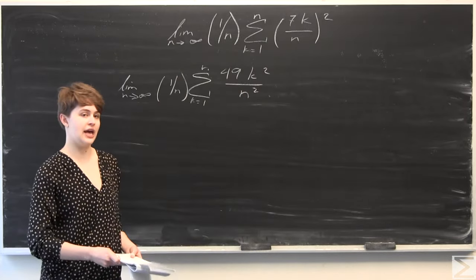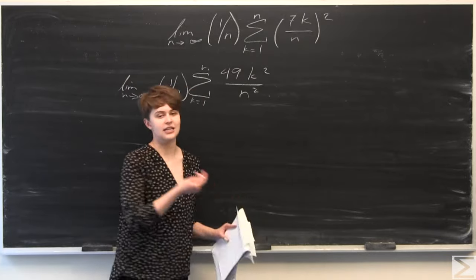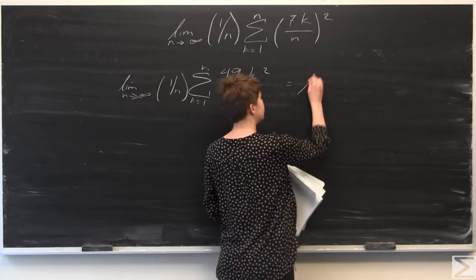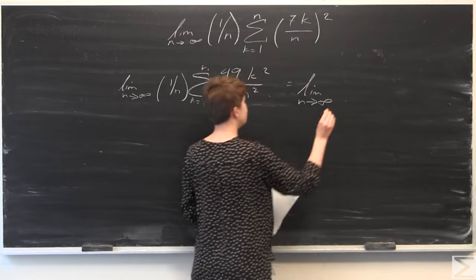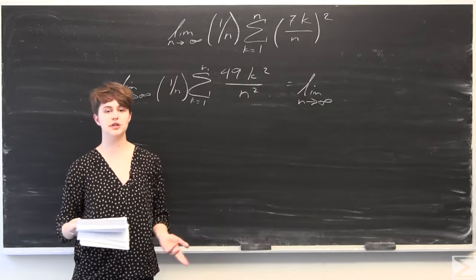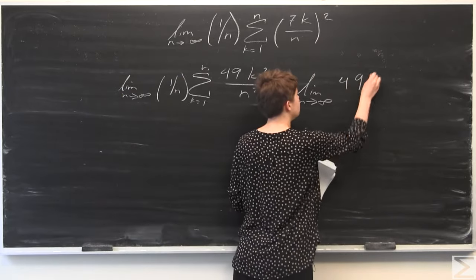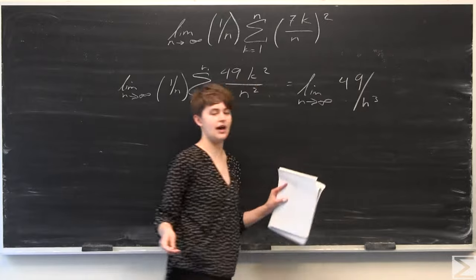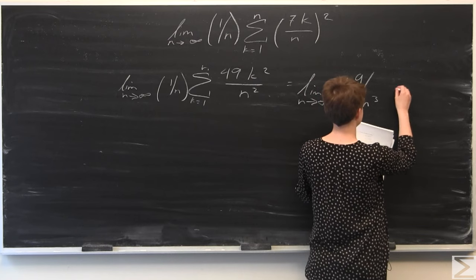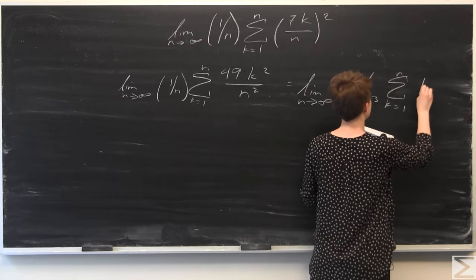So what we can do now is we can pull out the 1 over n squared from the denominator, because it does not depend on k. So we pull out a 1 over n squared, and we have a limit as n goes to infinity. When we pull out a 1 over n squared, we end up with 1 over n cubed. And we can actually pull out the 49 as well because it's just a constant and it doesn't depend on k. So we're going to end up having 49 over n cubed — because we had 1 over n times 1 over n squared is 1 over n cubed — all times the summation of k equals 1 to n of k squared.